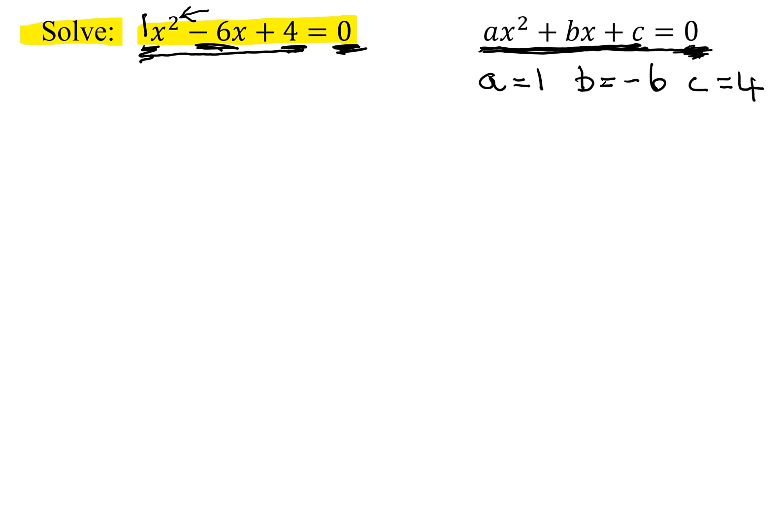If we were going to factor it, you figure out what a times c is, which is 1 times 4, which is 4. And then we'd look for 2 numbers that multiply to my ac, multiply to 4, and add to b, which is negative 6.